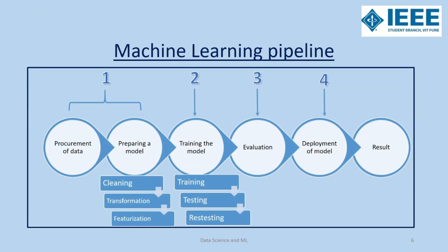Deploying machine learning involves various steps specified in the machine learning pipeline. The pipeline essentially modularizes into four steps: data ingestion and preparation, which involves cleaning, transformation, visualization, and featurization of the data; followed by training the model, which involves training, testing, and retesting; followed by evaluation of the model; and then the model is deployed to obtain the expected result.